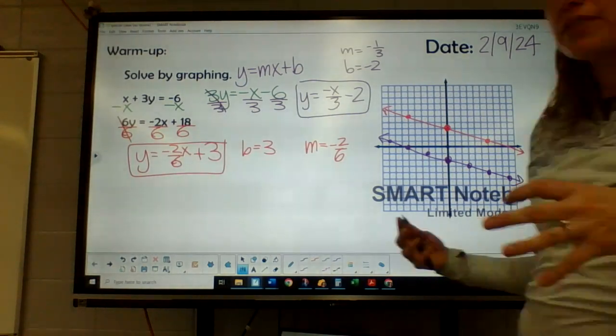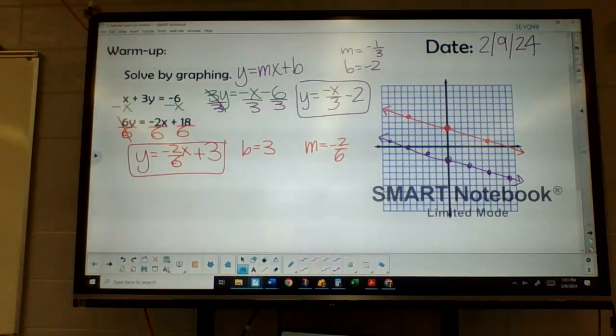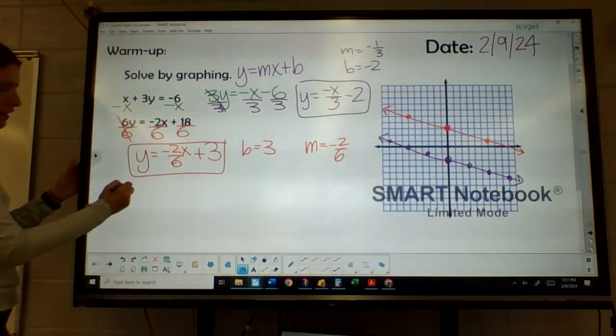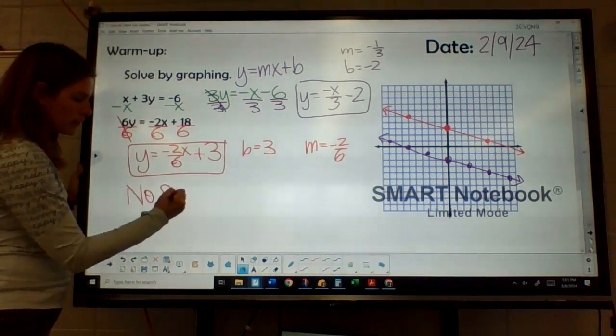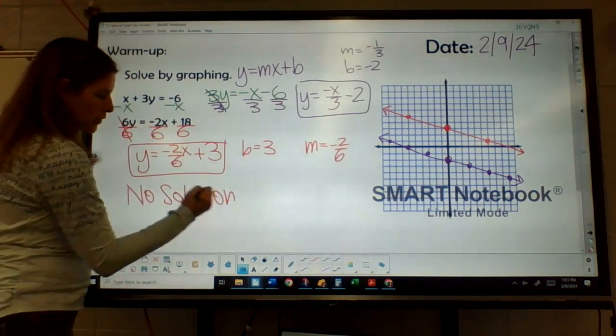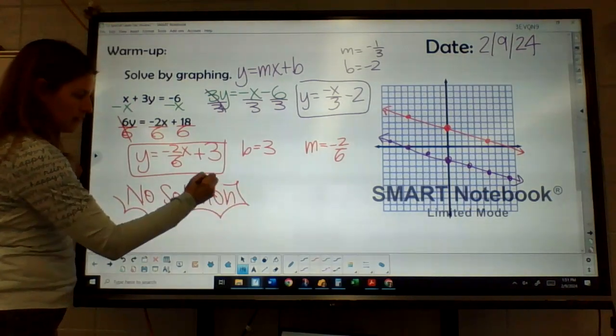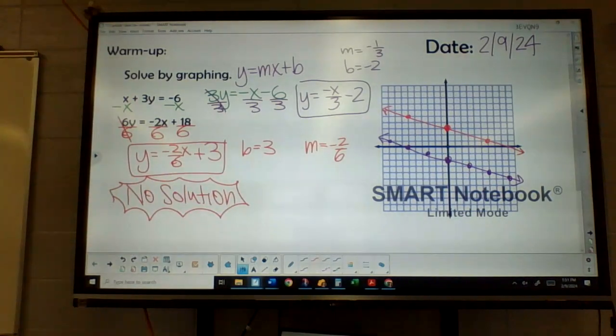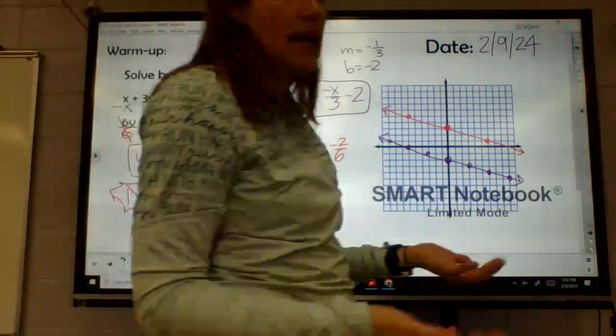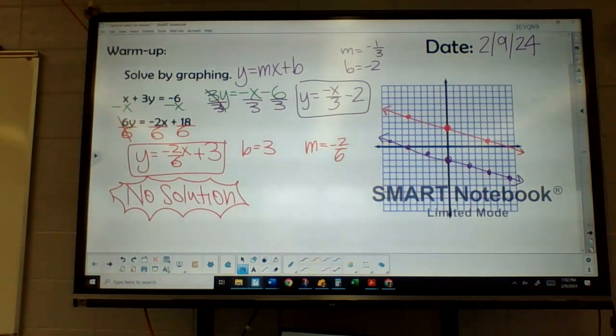So this idea with our lines that are parallel, what's our solution for this? We say there's no solution. They'll never cross. They'll never have anything in common. So there's no answer for these two. I could keep drawing these lines forever and they're never going to cross. So we would say that's no solution. That's one of our special cases we're going to deal with today. But it's also good for us to review graphing.